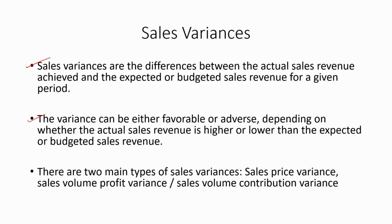The variance can be either favorable or adverse, depending on whether the actual sales revenue is higher or lower than the expected or budgeted sales revenue. There are two main types of sales variances: sales price variance and sales volume profit variance. Or, if we are using the marginal costing system, we can calculate the sales volume contribution variance.